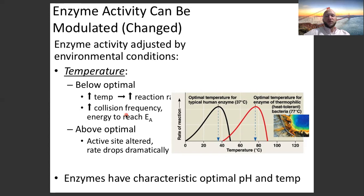Remember we talked about proteins — primary, secondary, tertiary, and quaternary structure. Sometimes when the temperature is not in the proper range, the bonds that hold the tertiary and quaternary shapes become broken and the enzyme loses its shape and becomes completely useless. Enzymes have a characteristic optimal pH and temperature.